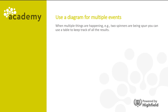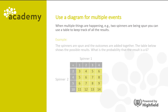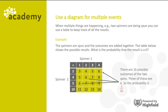When multiple things are happening, for example two spinners are being spun, you can use a table to keep track of all the results. In this example, the spinners are spun and the outcomes are added together. The table below shows the possible results. What is the probability that the result is a 6? There are 16 possible outcomes of the two spins. Three of these are 6, so the probability is 3/16.